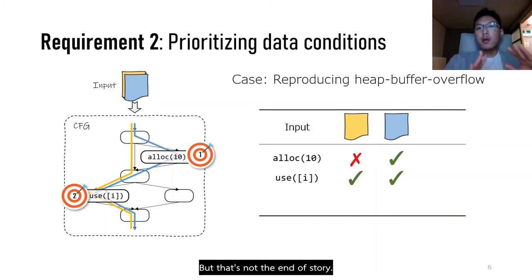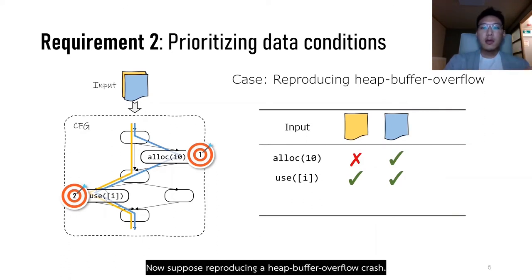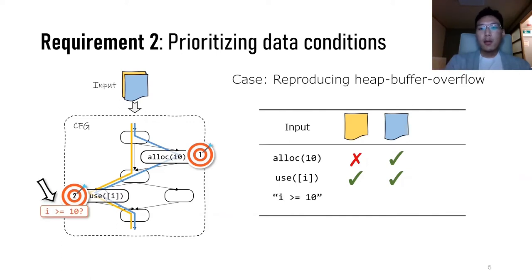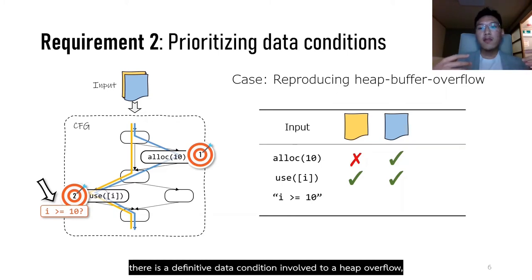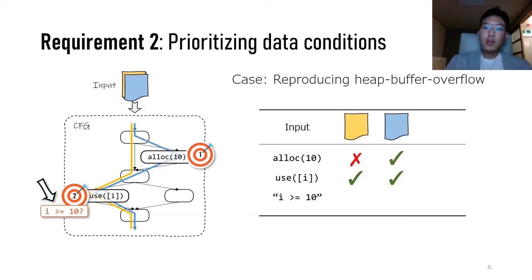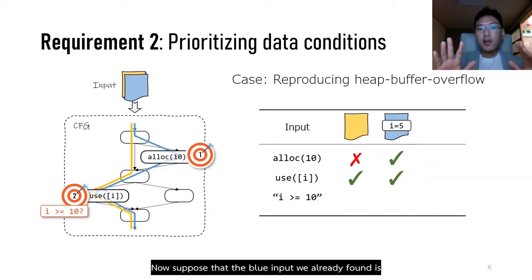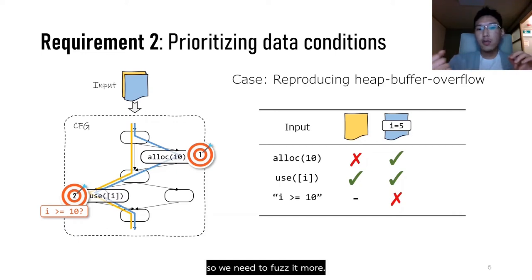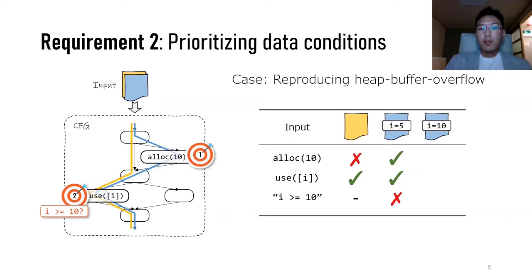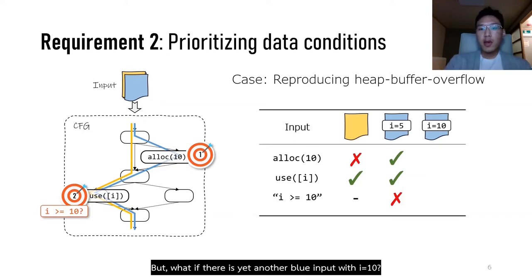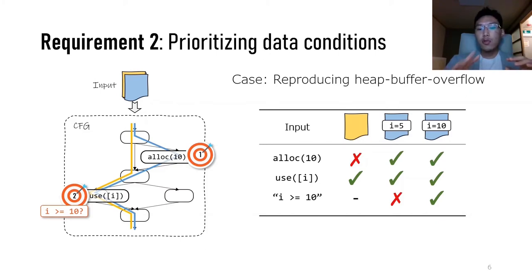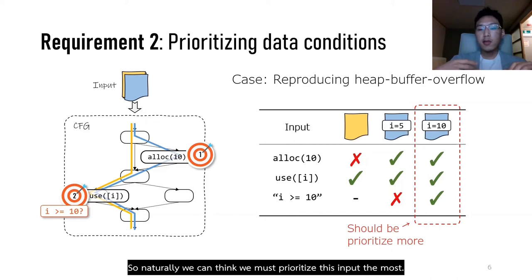But that's not the end of the story. Now suppose reproducing a heap buffer overflow crash. Again, the blue input is more valuable because it at least touches the vulnerable heap site first. But there is also a data condition involved in heap buffer overflow, which indicates the boundary of the buffer. Suppose the blue input we already found is paired with i equals 5 — the data condition is not yet satisfied, so we need to fuzz it more. But if there is another blue input with i equals 10, that input satisfies the data condition as well as touching both sites, so we must prioritize it the most.